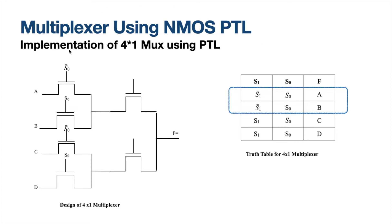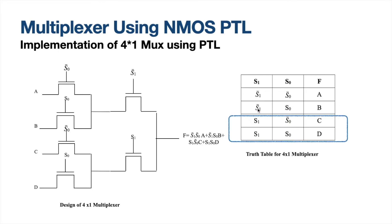So S0̄ input is A. When it is S0, I want B — therefore when it is S0, I need B. Both these logic blocks together are controlled by S1̄. When we look at the next set of combinations, we have S1 in common. When it is S0̄, I need C; when it is S0, I need D. These two combinations are common for the control signal S1, so they are clubbed together and controlled by S1, where S1 and S1̄ are mapped together.